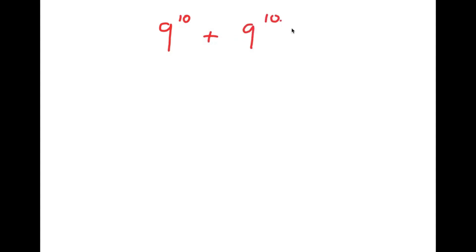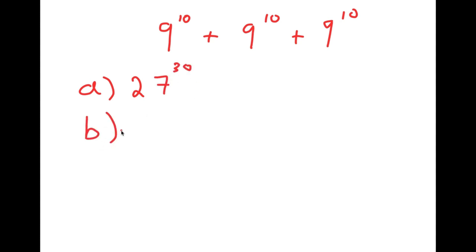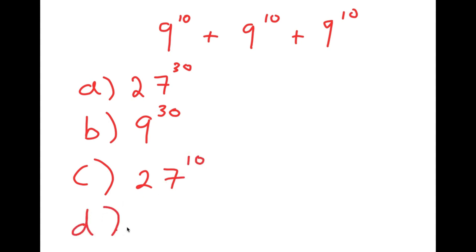In this video, I'm going to be solving the problem 9 to the power of 10 plus 9 to the power of 10 plus 9 to the power of 10. For this problem, I have four answer choices: A is 27 to the power of 30, B is 9 to the power of 30, C is 27 to the power of 10, and D is 3 to the power of 21. Let's go through all the answer choices and see if they're right or not.